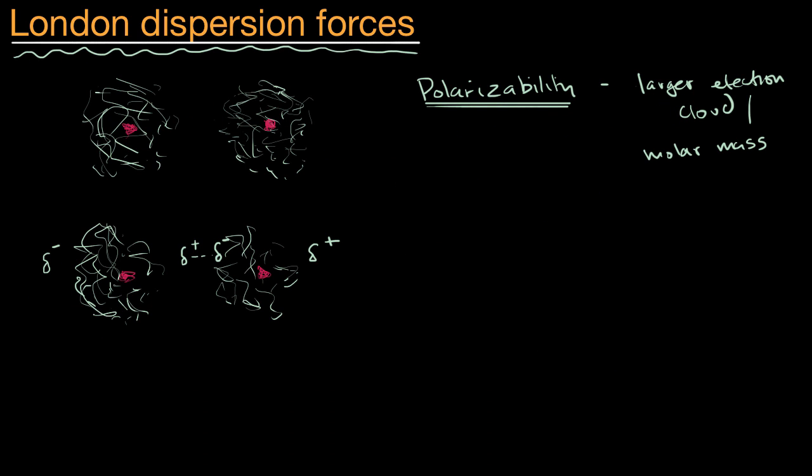Generally speaking, the larger the molecule, because it has a larger electron cloud, it'll have higher polarizability and higher London dispersion forces. But also the shape of the molecule matters. The more that the molecules can come in contact with each other, the more surface area they have exposed to each other, the more likely that they can induce these dipoles in each other.